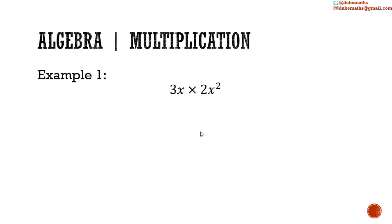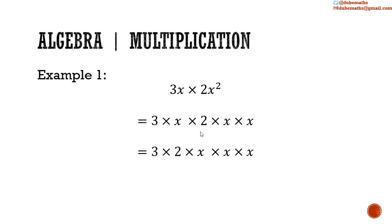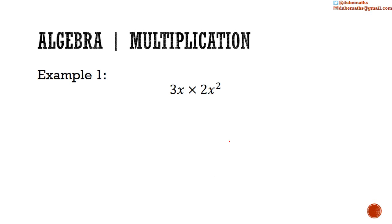Multiplication of algebraic terms. Example 1: 3x multiplied by 2x squared. 3x is 3 multiplied by x, and 2x squared is 2 multiplied by x multiplied by x. We group all the numbers together and all the letters together and simplify: 3 multiplied by 2 multiplied by x multiplied by x multiplied by x. 3 multiplied by 2 is 6, and x multiplied by x multiplied by x is x cubed, so it's 6x cubed.